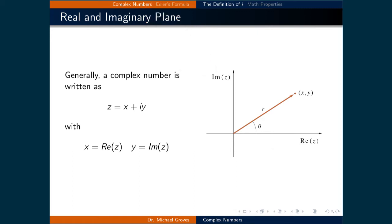Now, instead of numbers simply being along a single linear continuum, they sit on a two-dimensional plane where they are expressed as vectors. These vectors are denoted as z, and are generally written as x plus i times y, where x is the real component of z, while y is the imaginary component of z.